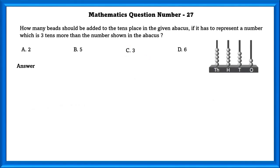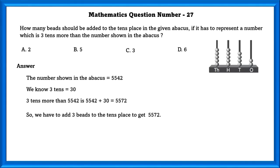Mathematics question number 27. How many beads should be added to tenths place in the given abacus if it has to represent a number which is 3 tenths more than the given number shown in the abacus? The number shown in the abacus is 5542. We know that 3 tenths is equal to 31. 3 tenths more than 5542 is equal to 5572. So we have to add 3 beads to tenths place to get 5572.